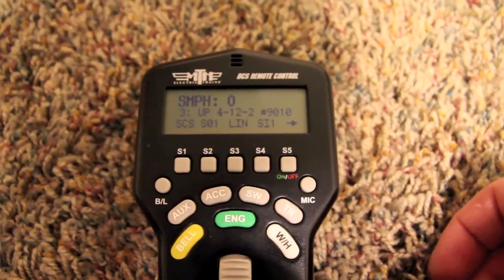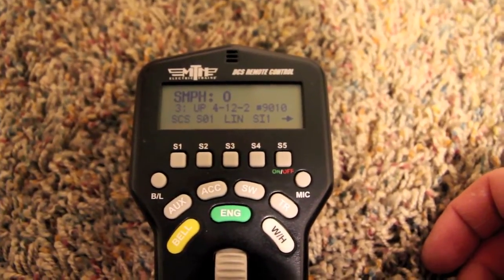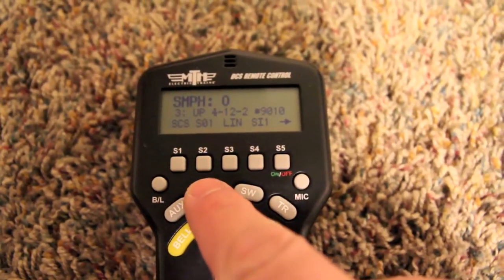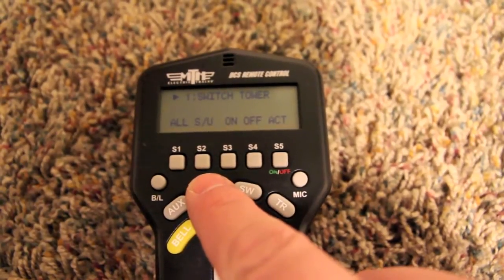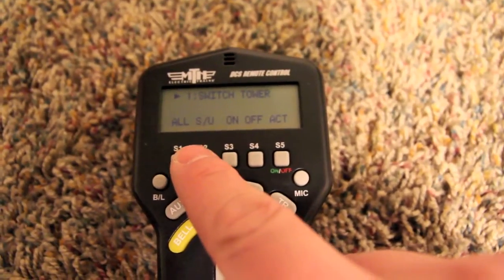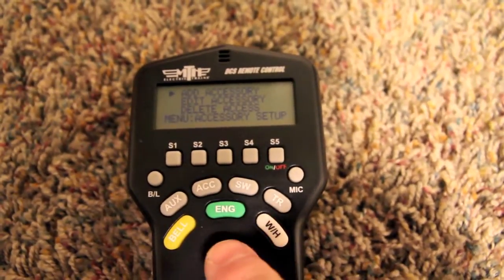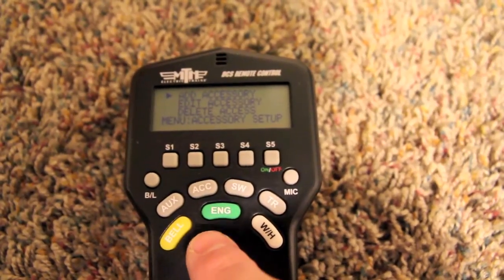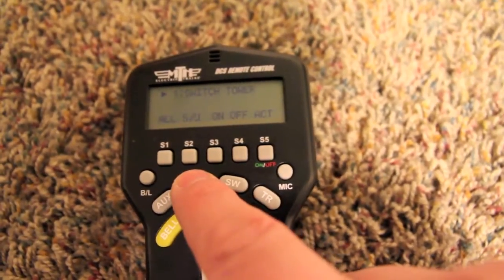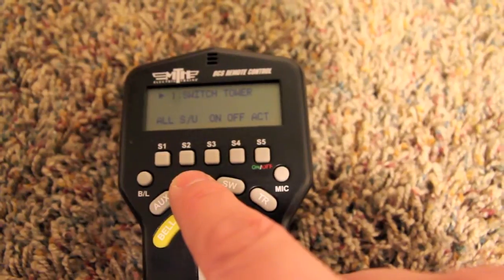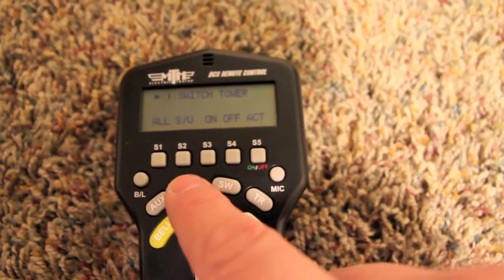To program the building into the DCS remote, I went to accessories, and then I added the building, and after I gave it a name Switch Tower, it was ready to go.